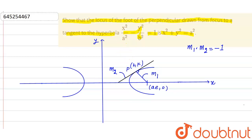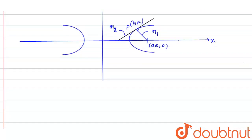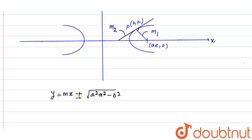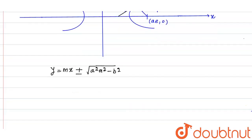The equation of the tangent to the hyperbola is y = mx ± √(a²m² - b²).